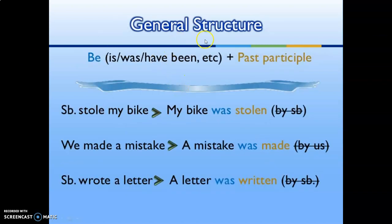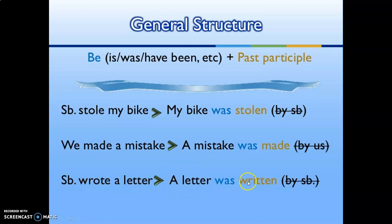The general structure for passive voice: the B-form (is, was, have been, etc.) plus past participle. Examples: 'Subject stole my bike' → 'My bike was stolen.' 'We made a mistake' → 'A mistake was made.' 'Subject wrote a letter' → 'A letter was written.' See the subject change in each case.